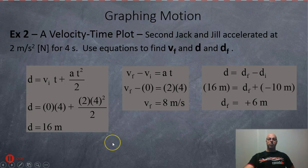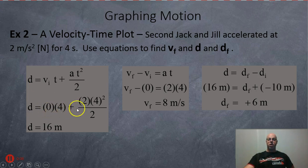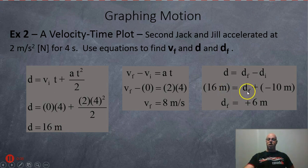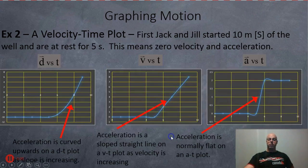For the second part of the trip, they accelerate at two meters per second squared north for four seconds. Using our equations of motion: displacement equals zero times four plus two times four squared over two, giving a displacement of 16 meters north. Starting at minus 10, they add 16 and end up at 6 meters north of the well. For final velocity: VF minus zero equals two times four, so they end up at 8 meters per second.